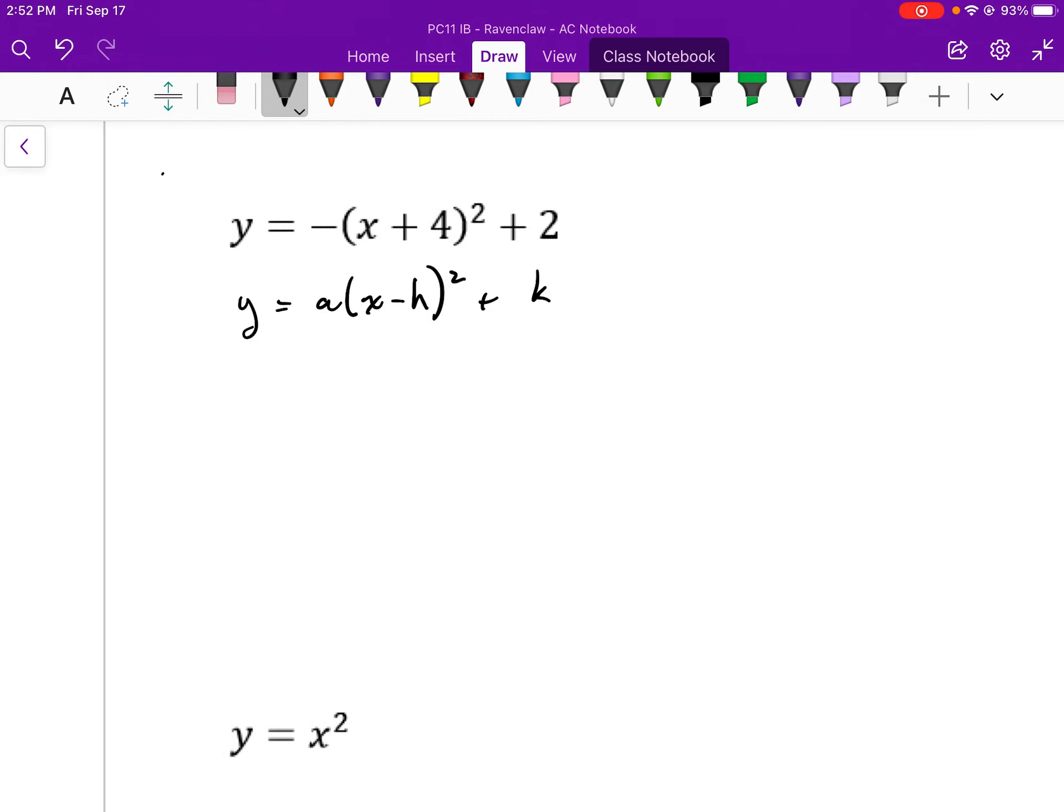In the second example, y equals negative, open brackets, that's x plus 4 squared plus 2. So right away, what we see is a negative sign in front of the squared term. So this means that a is equal to negative 1. And now we're after h and k. k is equal to 2.